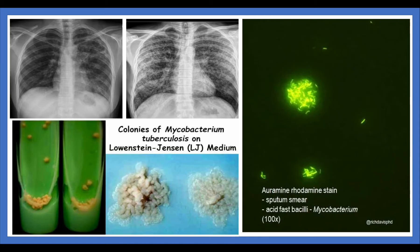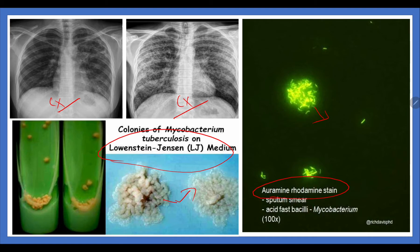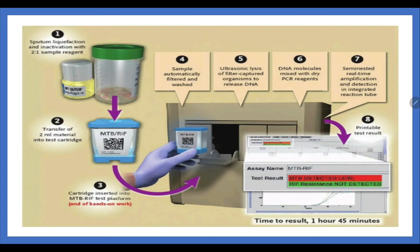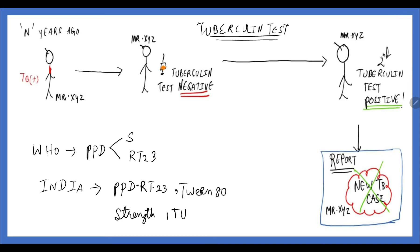These are clinical findings — chest X-ray of TB and chest X-ray of miliary tuberculosis. This is LJ medium showing colonies with tubercle bacilli growth. This is fluorescent microscopy with auramine-rhodamine stain. This is the CBNAAT cartridge — we place the sample inside, process it, and it identifies the TB bacilli genotype. CBNAAT also detects resistance to rifampicin.